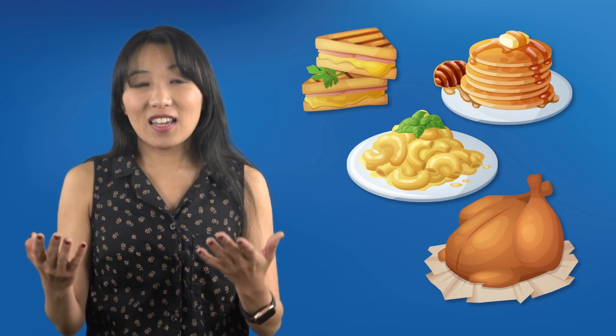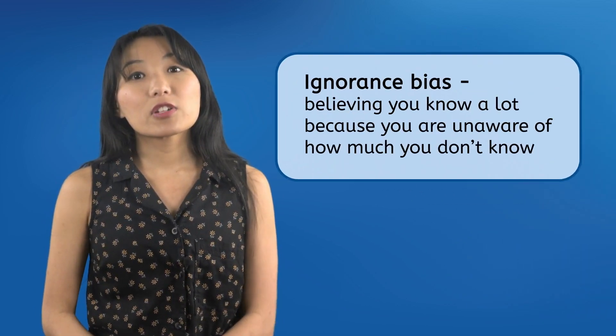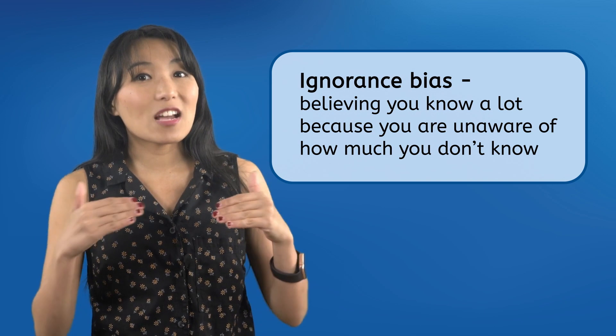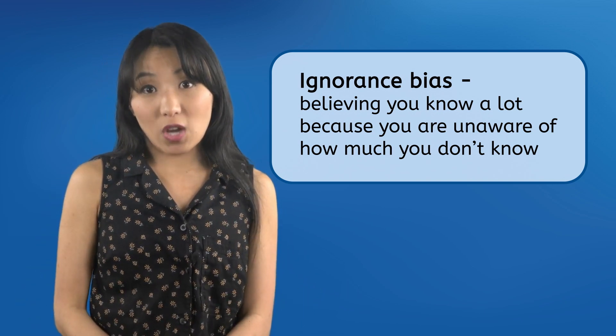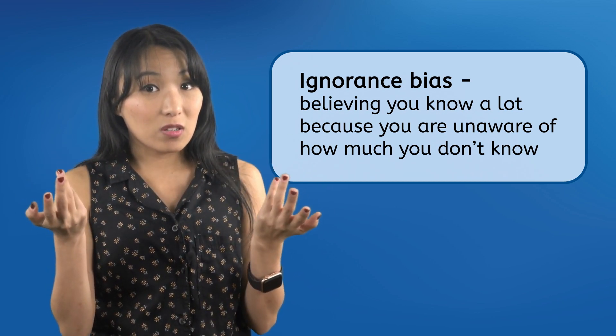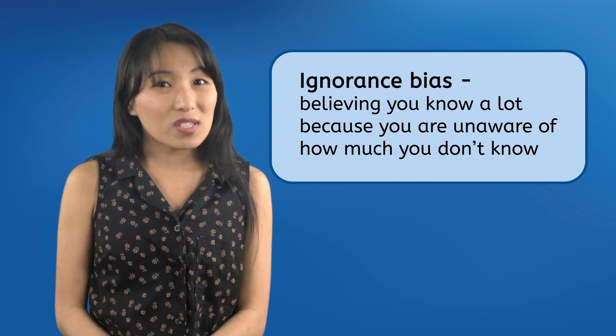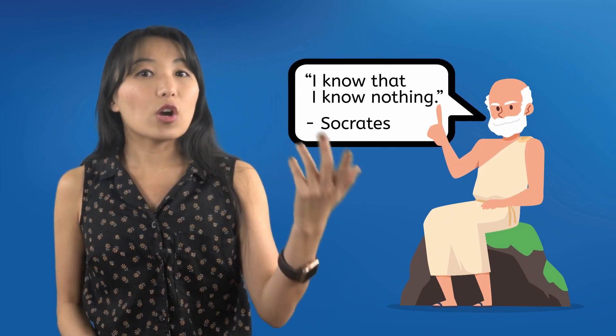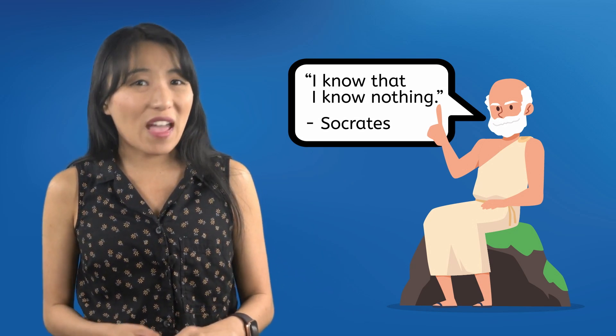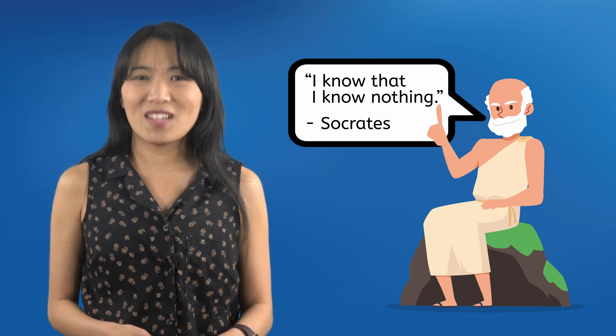Imagine you've cooked and eaten nothing but macaroni and cheese all your life. Since you've mastered the only food you know, you might think yourself a culinary expert — but that's only because you don't know how many more foods are out there. And if you think you're already an expert, are you going to go searching for new recipes online? Probably not. Ignorance bias is when you believe you know a lot because you don't realize how much information you're missing. This can be a huge obstacle when doing online research. As the philosopher Socrates said: 'I know that I know nothing.' Never let yourself believe you know everything about anything — always be searching for more information.